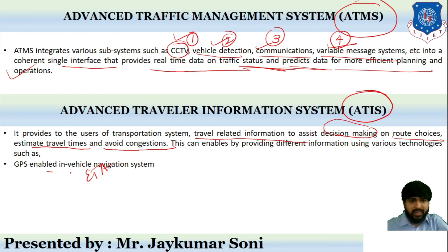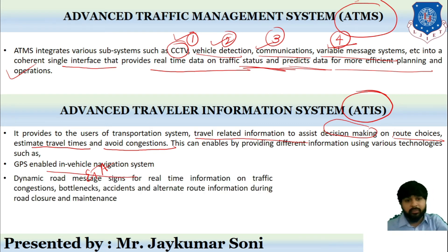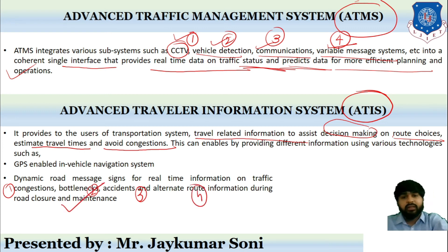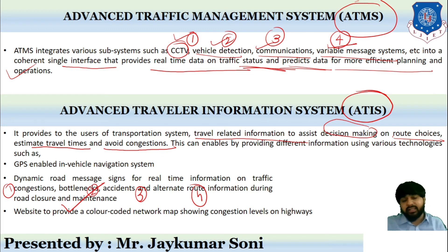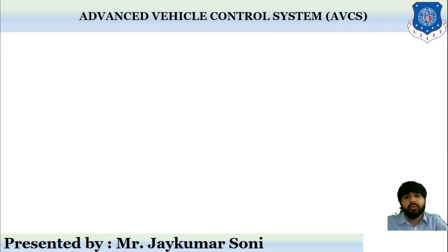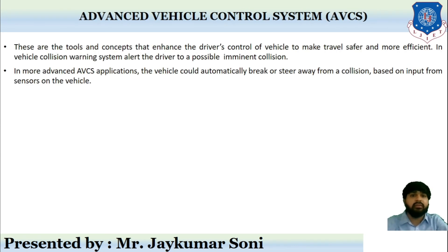This includes GPS-enabled in-vehicle navigation systems, now observed in many cars. Dynamic road message signs provide real-time information on traffic congestion, bottlenecks — areas with high traffic — accidents, and alternate route information during road closure and maintenance. There is also the development of websites providing color-coded network maps that show congestion levels, similar to what we view on Google Maps.